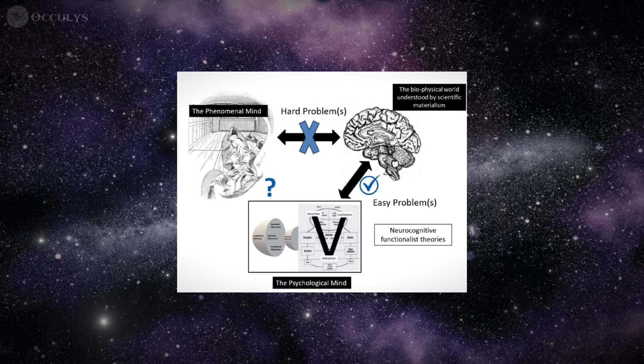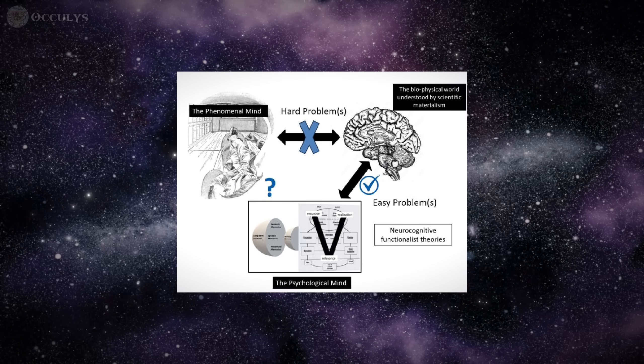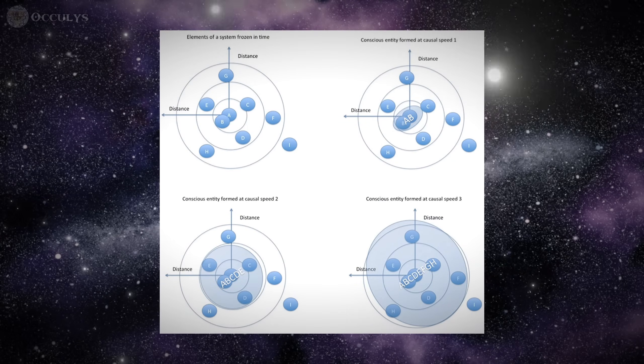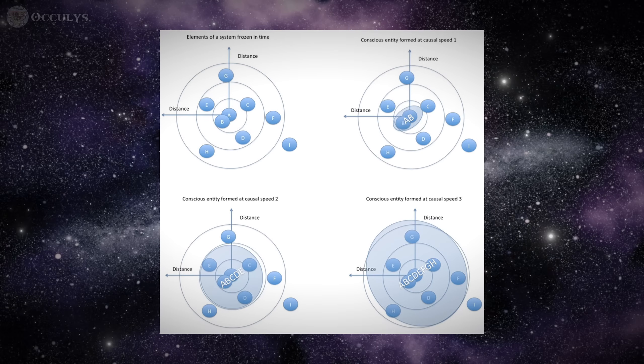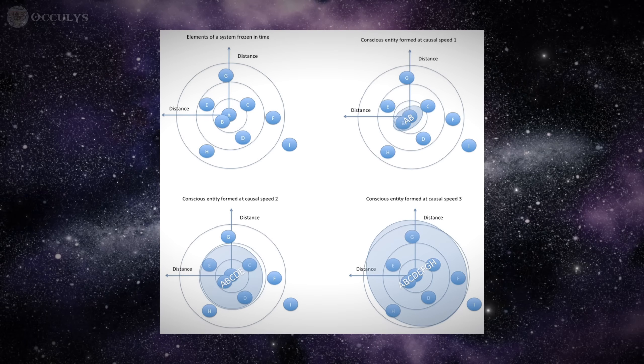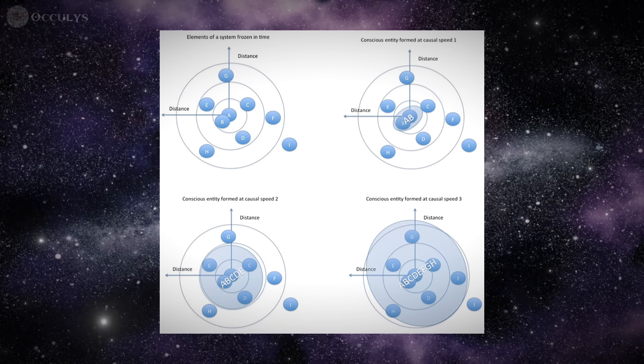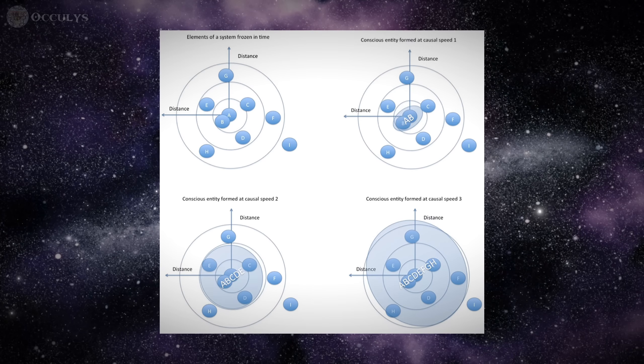However, in response to this very challenge, theorists are exploring novel scientific models that could provide the missing mechanism. The general resonance theory, for example, suggests that consciousness is not merely summed, but is the product of synchronized vibrations, much like tuning forks vibrating in unison. In this view, entities can share and combine into a larger conscious state by resonating together.